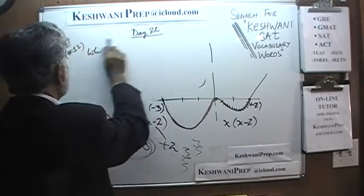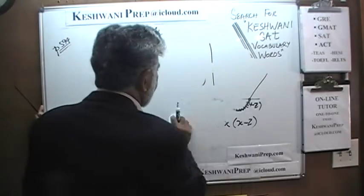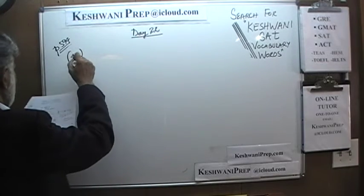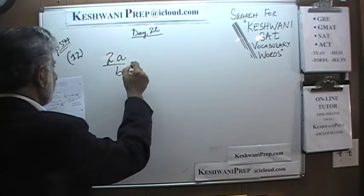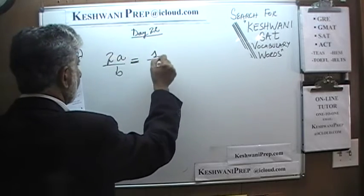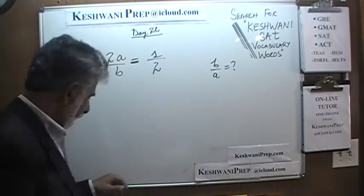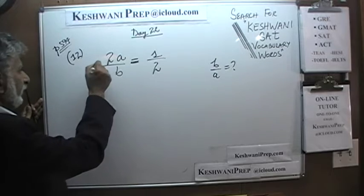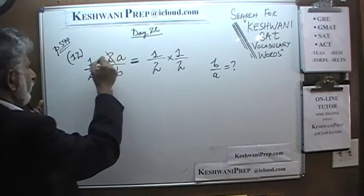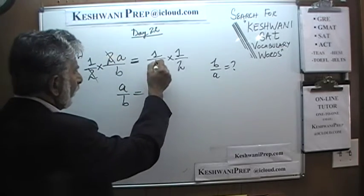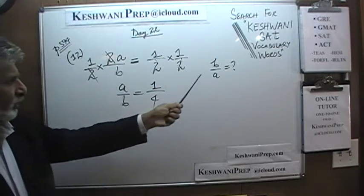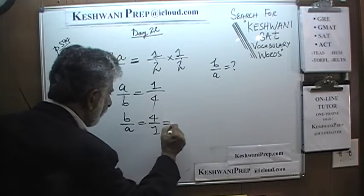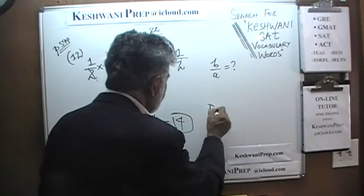Let's do number 12. It says 2 times (A/B) equals one half. The question is: how much is B/A? First, get rid of the 2 by multiplying both sides by one half. The 2 cancels, and we end up with A/B equals one quarter. We're not looking for A/B — we're looking for B/A — so we take the reciprocal of the whole equation, and B/A is simply 4. The answer is D.